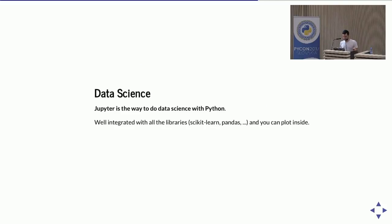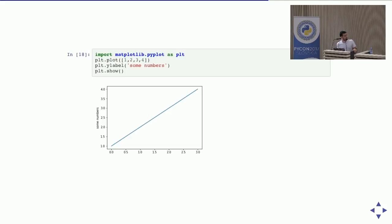For data science, Python is the main language right now. R is more related to statistics, and Java is more related to Hadoop and Spark, but considering the deep learning world, Python is really the future. The Jupyter Notebook is the way to do data science with Python — all the libraries are well integrated. You can use scikit-learn, pandas, and plot directly inside the notebook with just a few lines of code.